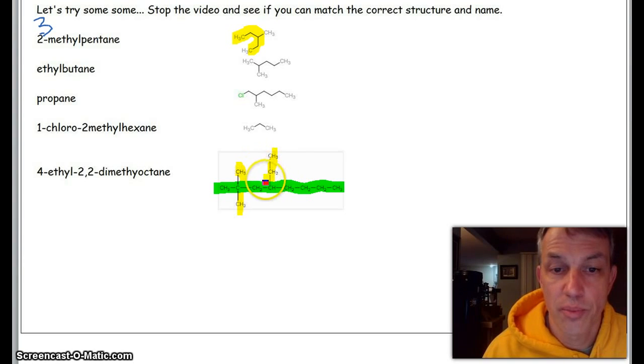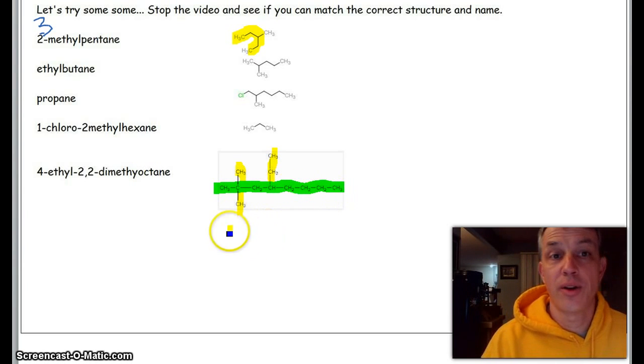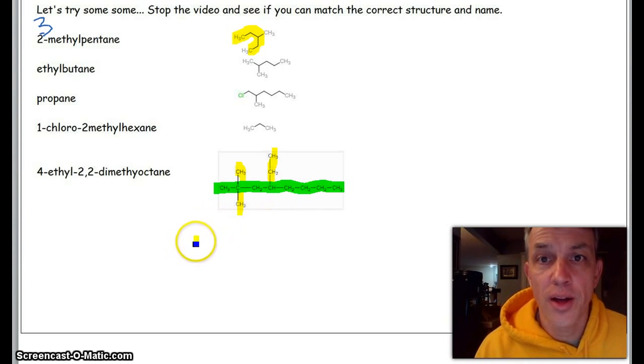Dimethyl octane: one, two, three, four, five, six, seven, eight. Now what I would encourage you to do now is turn this off and do some problems, because that would be the best way to see it.